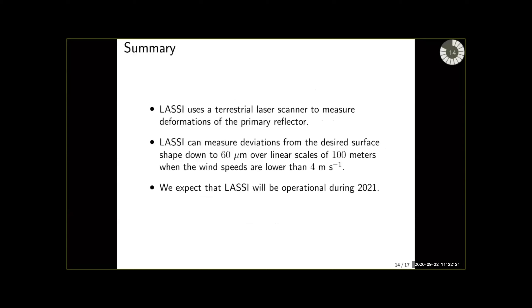So as a summary, LASI uses a terrestrial laser scanner to measure the deformations of the primary reflector. During the last year we have been able to see that we're able to measure the deformations down to 60 microns over linear scales of hundreds of meters.